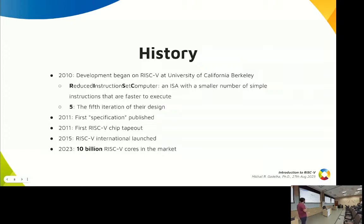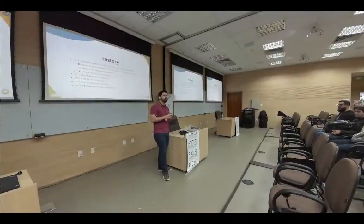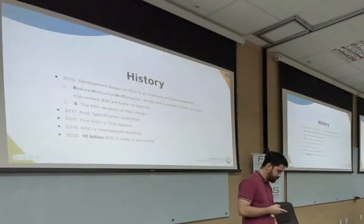These are cores, not processors — you can have more than one core per processor. So today we have 10 billion cores in the market. I have one here with me, actually four cores — this is a SiFive board. As you can see, it's roughly the same size as a Raspberry Pi, has eight gigs of RAM, and it's a quite nice board because it was mass-produced through Kickstarter.